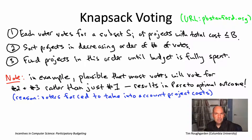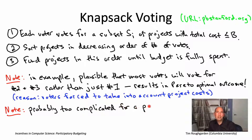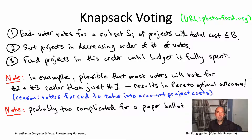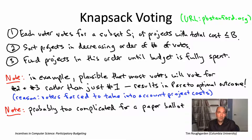One thing to note is that knapsack voting, unlike K-approval voting, would be challenging to implement as a paper ballot, because it would force voters to keep track themselves of whether the sum of project costs of selected projects is at most the budget. If someone votes for something that goes over budget, what do you do? Do you throw out their vote? Do you use the first projects they picked up to the budget?